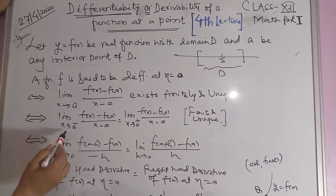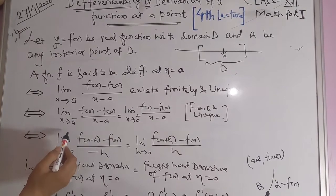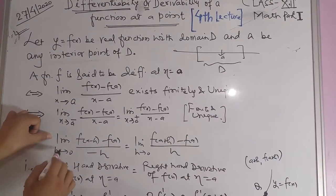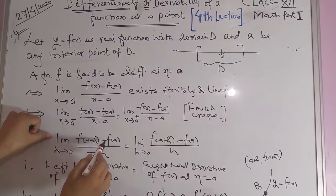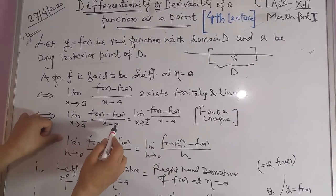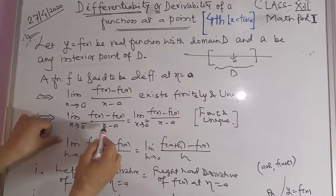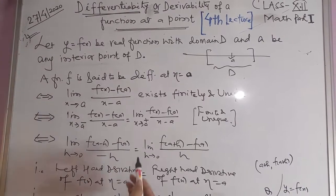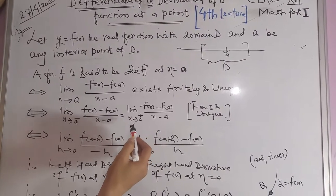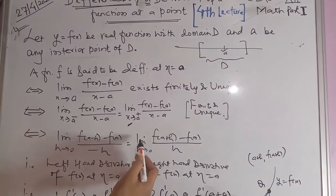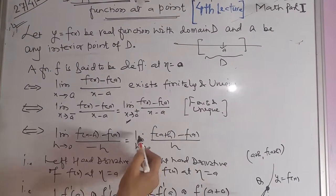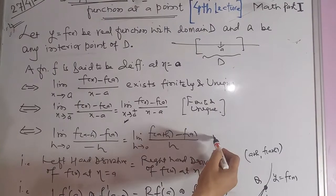If we substitute x equal to a minus h and h tends to 0, this reduces to limit h tends to 0 of [f(a minus h) minus f(a)] upon [minus h]. For the right side, we put x equal to a plus h, giving limit h tends to 0 of [f(a plus h) minus f(a)] upon h, which should be finite and unique.